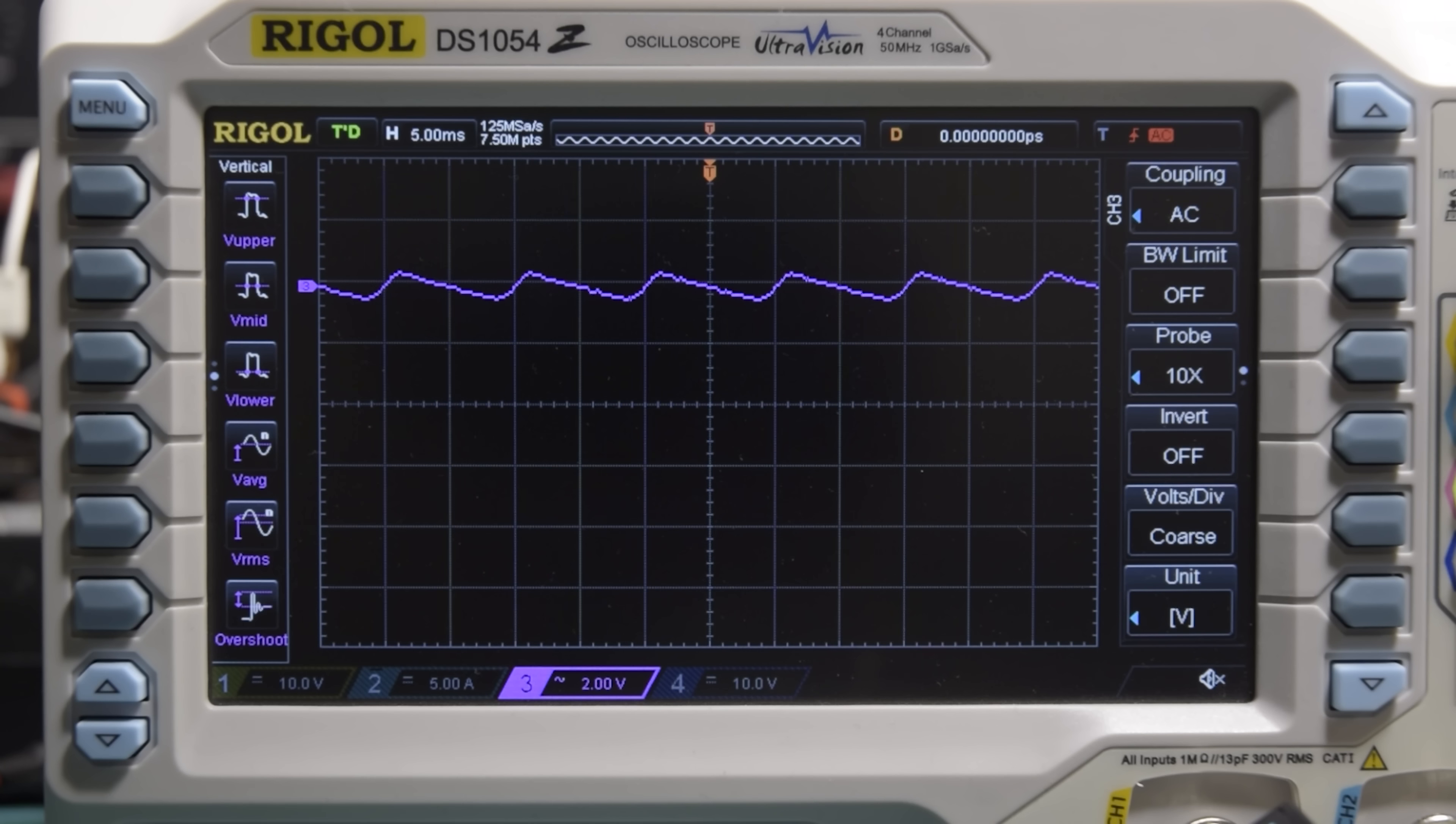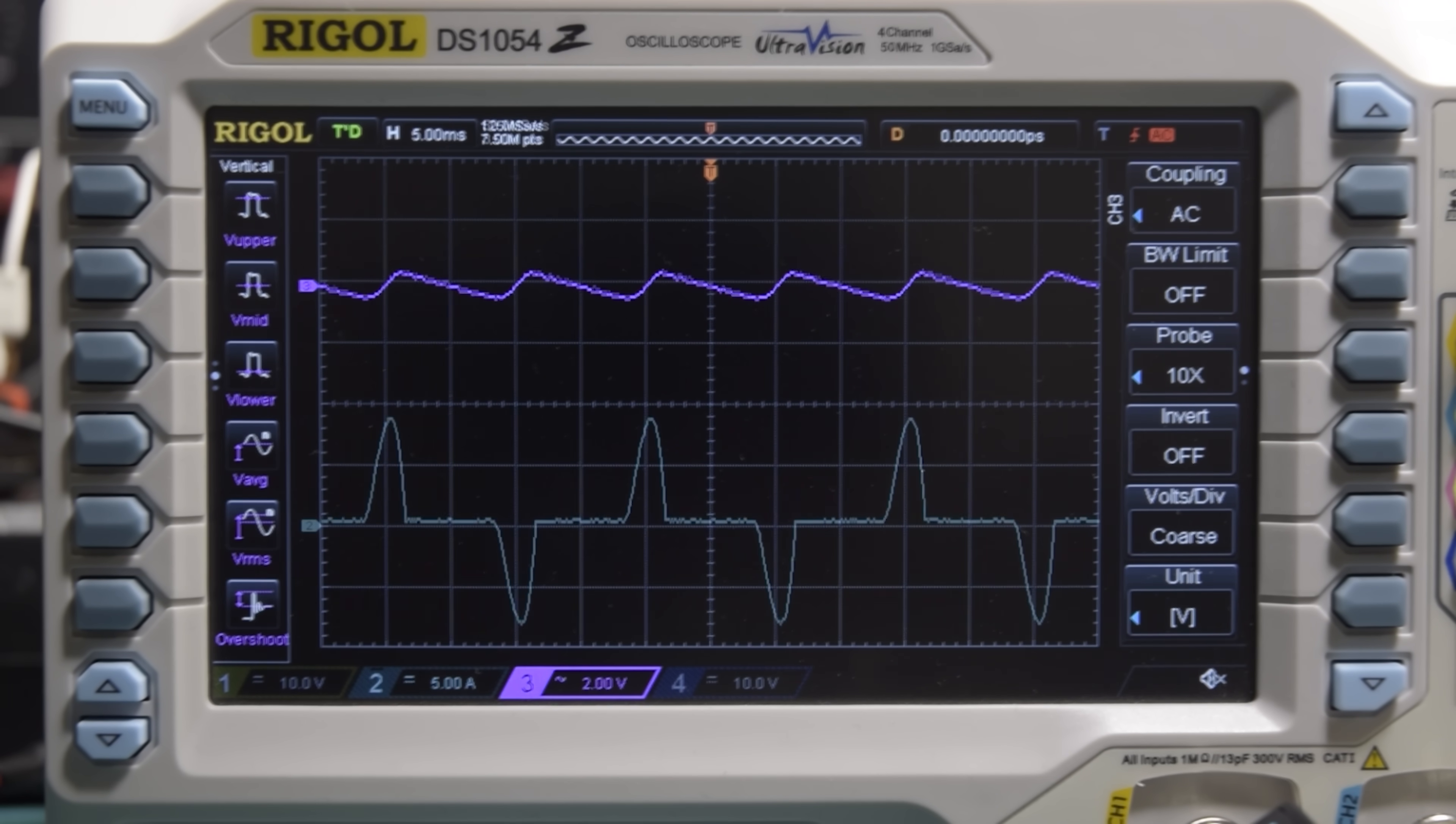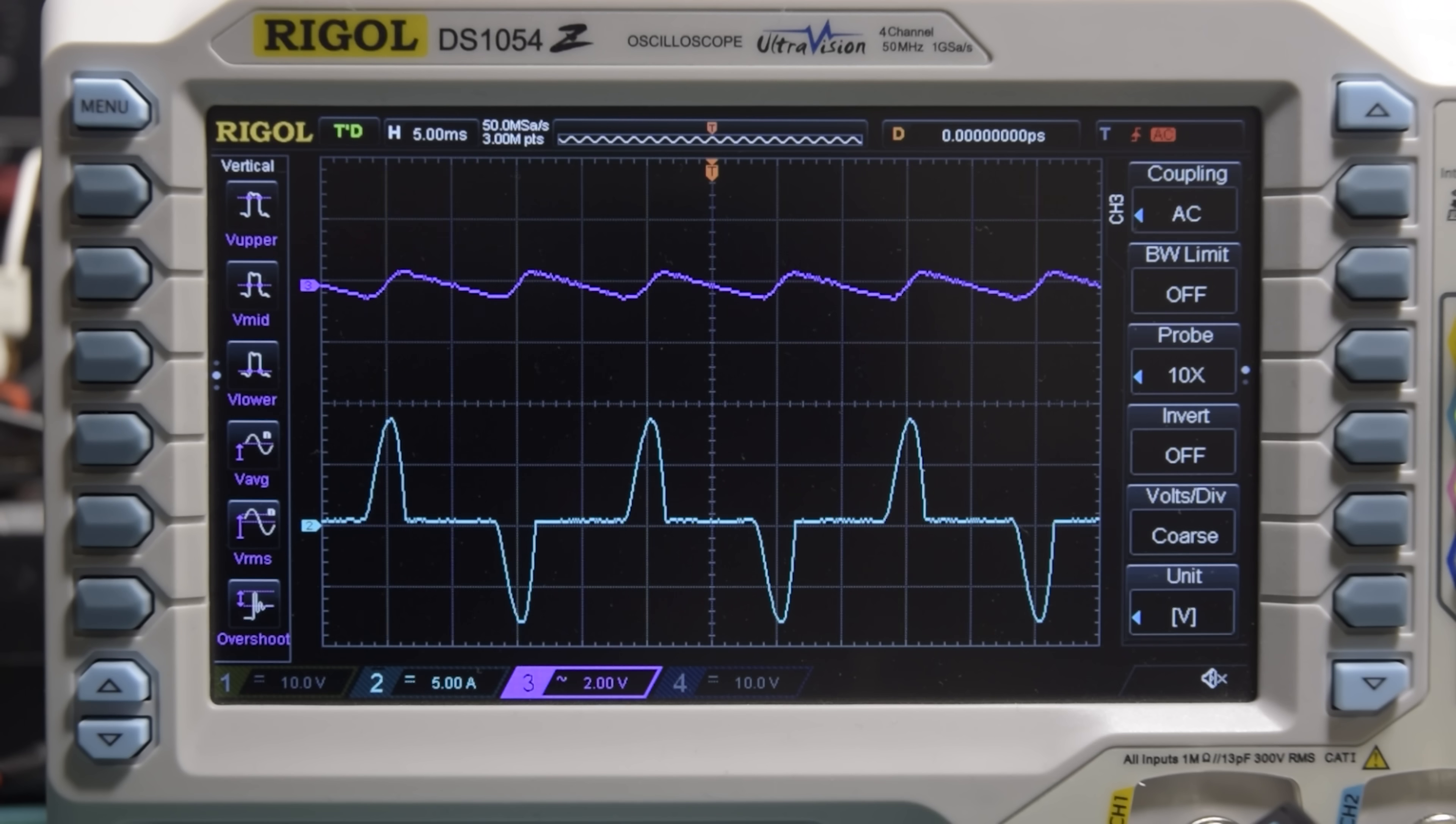Because we're only charging up the capacitor at the peaks of the wave, that means all the energy that's going to flow into our DC load until the next time the cap gets charged up needs to be put into the capacitor in one go, a short, sharp pulse of current, which we can see here on the oscilloscope.